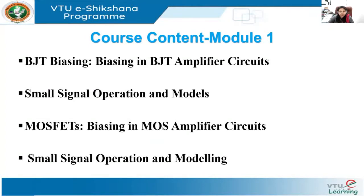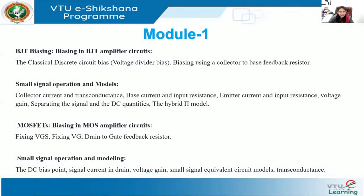The content of Module One covers BJT biasing, BJT amplifier circuits, and an introduction to small signal operations and models. The second part of Module One focuses on biasing and MOSFET amplifier circuits and small signal operations and modeling. In detail, we will focus on different biasing approaches for BJT, biasing using the collector-to-base feedback resistor, and in small signal operations we will discuss collector current and transconductance.